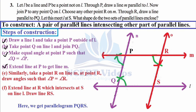The question asks what shape the two sets of parallel lines enclose. To make this final line parallel to PQ, we use corresponding angles of a transversal: make angle P equal to angle R. This construction makes corresponding angles equal, and the lines joining such transversals are parallel. This is another property of parallel lines we have studied.